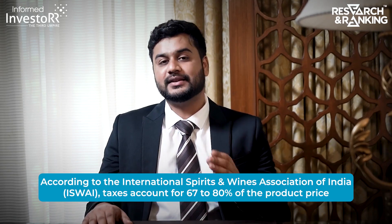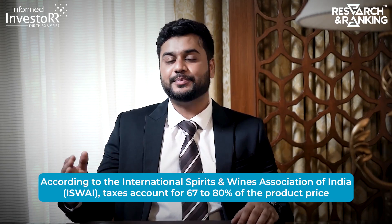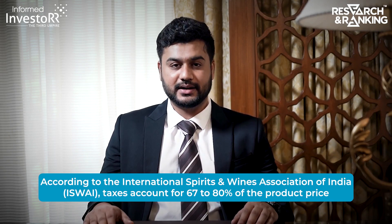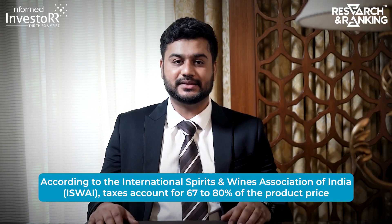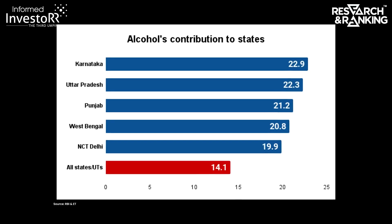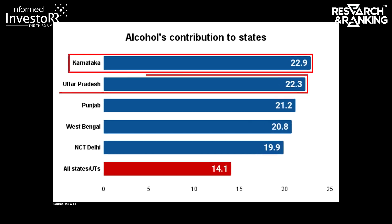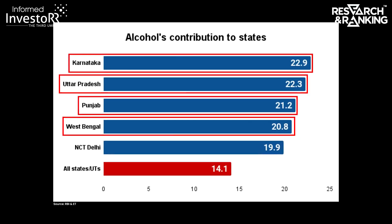However, after the introduction of GST, most input raw materials now attract 18% GST, resulting in increased costs. According to the International Spirits and Wine Associations of India, the apex body of the premium alcohol industry, taxes account for nearly 67% to 80% of product prices, leaving little for trade to sustain and manage operations. A statewide comparison indicates Karnataka, UP, Punjab and West Bengal rely more on excise duty, with alcohol contributing over 20% of tax revenue.